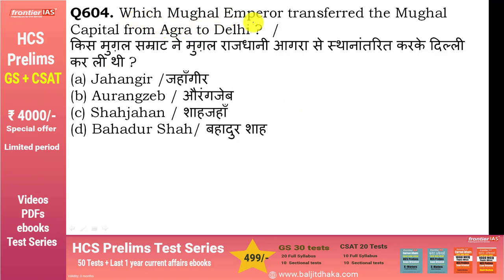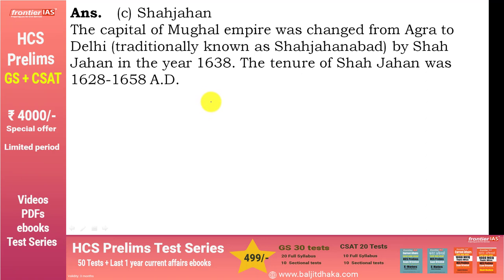Which Mughal emperor transferred the Mughal capital from Agra to Delhi? किस मुगल सम्राट ने मुगल राजधानी आगरा से दिल्ली स्थानांतरित की? यह Shah Jahan के द्वारा की गई थी। Capital shift 1638 में हुई थी। Shah Jahan का tenure 1628 से 1658 तक था। Shahjahanabad को आपकी old Delhi कहा जाता है।